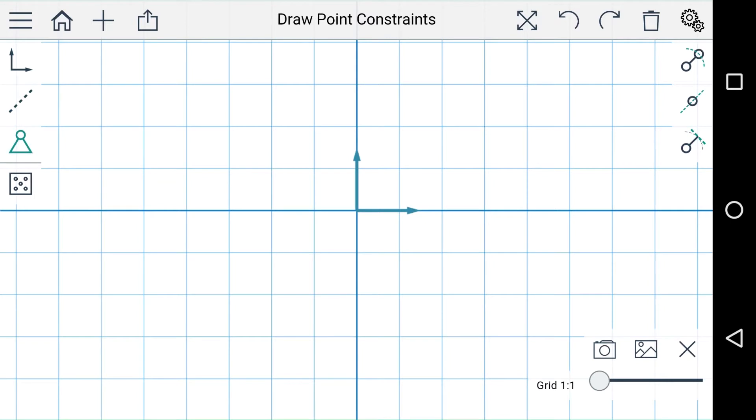In order to synthesize a mechanism in MotionGen you'll need at least five constraints so let's start with pose constraints. A pose constraint defines a position of the coupler along its path.